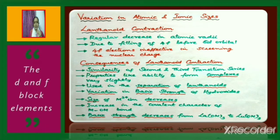Lanthanoid contraction is due to the filling of the 4f orbital before the 5d orbital. The 4f electrons are ineffective in screening the nuclear charge, and this is the reason why there is a regular decrease in atomic radii among lanthanoids.